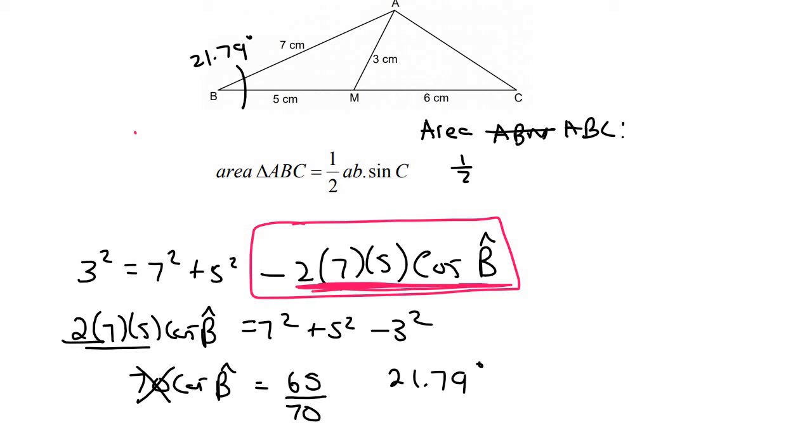is going to be equal to a half. Now we can choose the 7, and then we can choose this whole length, which is 6 plus 5 is 11, and then sin of the angle between, which is the new one that we've just found. Go ahead, type that all in, and that's going to give us 14.29 centimeters squared.